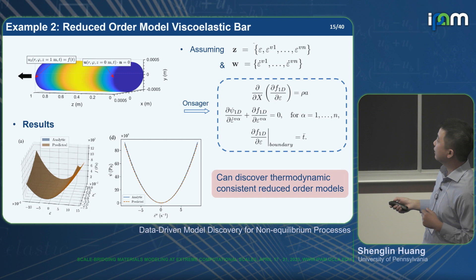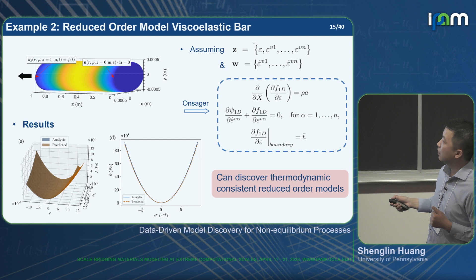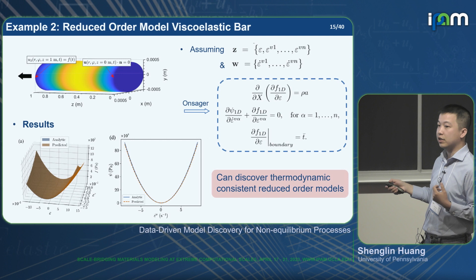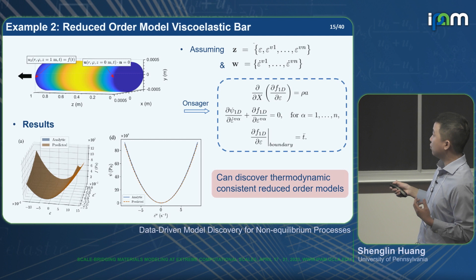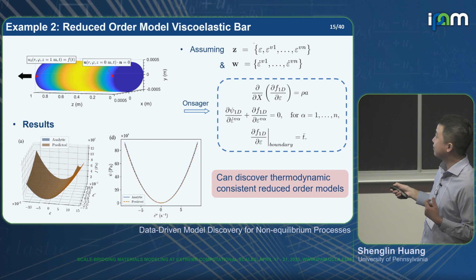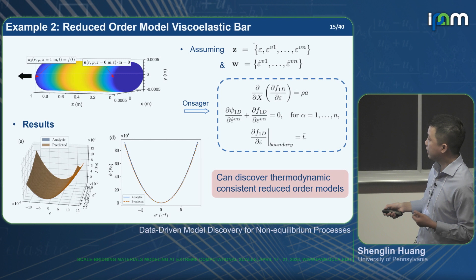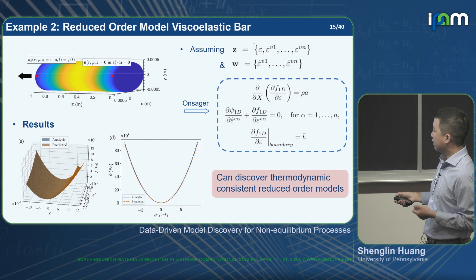The second example is a reduced order model for a viscoelastic bar. We have a three-dimensional cylindrical viscoelastic bar fixed at one end and pulled at the other. Instead of reconstructing the full 3D model, we are only interested in the one-dimensional response, so we assume the state variable is the 1D strain and viscous strain, and the process variable is only the 1D viscous strain rate. From the Onsager variational principle we obtain a governing equation for the 1D reduced order model, and the learned free energy and dissipation potential agree well with the analytic solution.